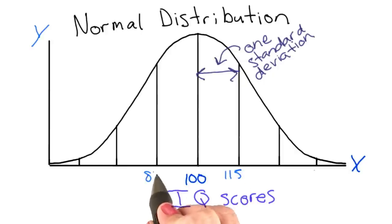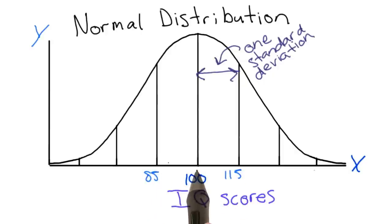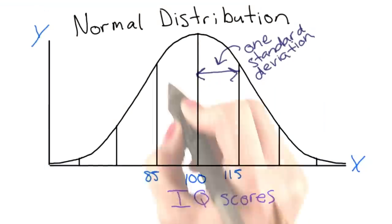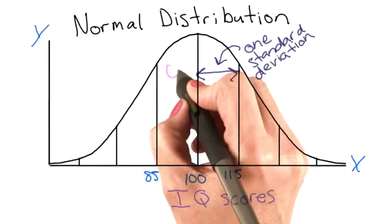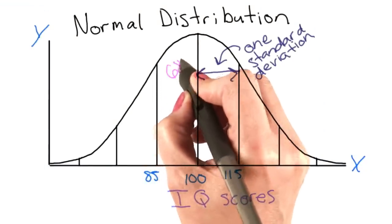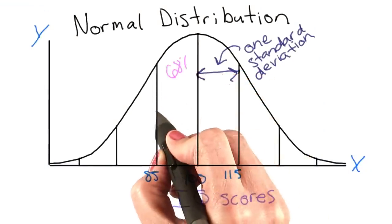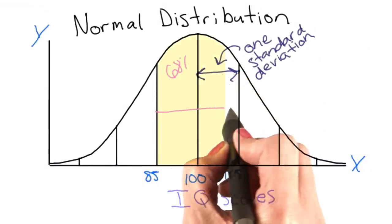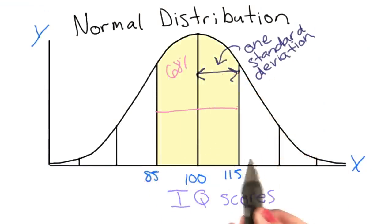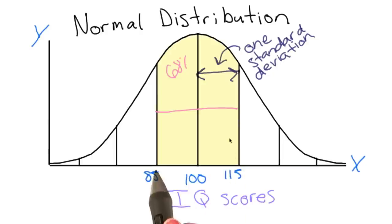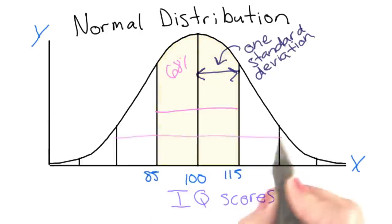85, however, would be one standard deviation below the mean. We see that 68% of the population will fall between one standard deviation above the mean and one standard deviation below the mean.